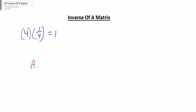If we take matrix A and we multiply that by its inverse — A to the negative 1, the inverse of A — then we want this to be equal to the identity matrix, I sub n, where n is the order based on the order of A. It also means that if you take the inverse of A and multiply that by A, you still get the identity matrix. So anytime you multiply two matrices together and get the identity matrix, that tells you the two matrices are inverses of each other.